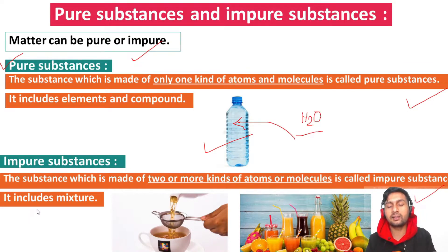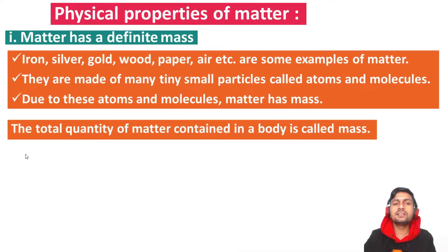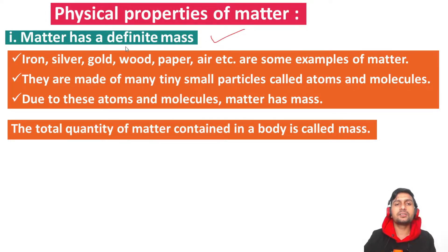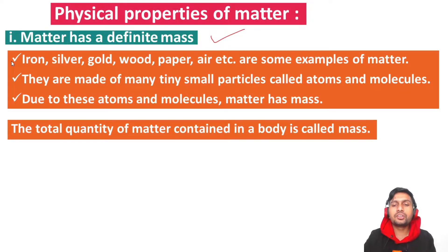Matter has a definite, fixed mass. Iron, silver, gold, wood, paper, air, etc. are some examples of matter. They are made up of tiny, smallest particles called atoms and molecules.